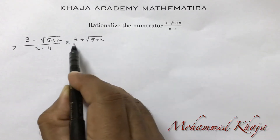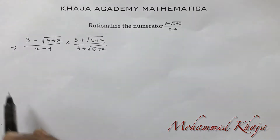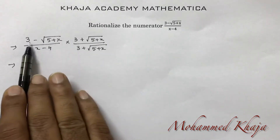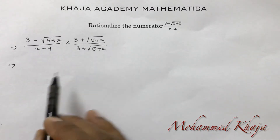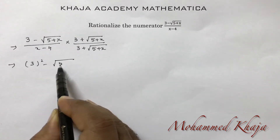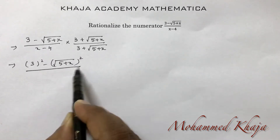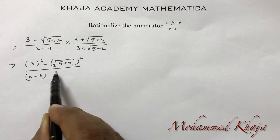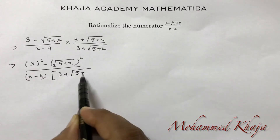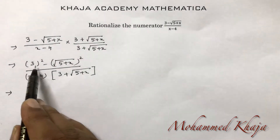Multiply and divide by 3 plus root(5+x). In the numerator, we apply the identity (a minus b)(a plus b) equals a squared minus b squared. So the numerator becomes a squared minus b squared, which is 3 squared minus root(5+x) whole squared, and the denominator is x minus 4 into 3 plus root(5+x).